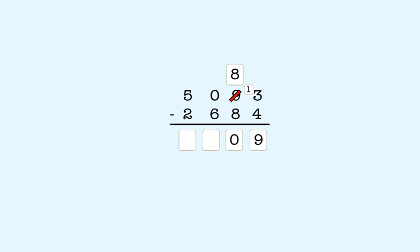In the hundreds column, we can't subtract six from zero, so we take a one from the thousands. So we now have ten minus six, which is equal to four.